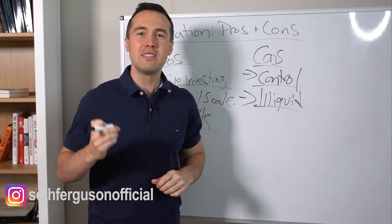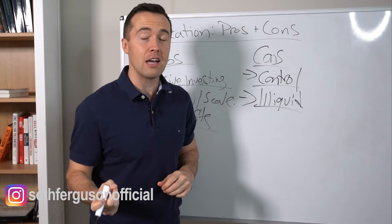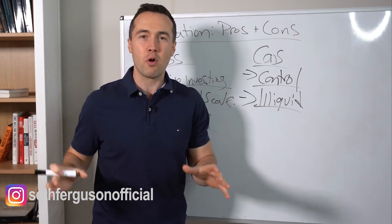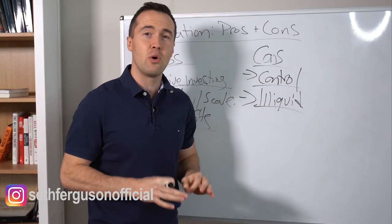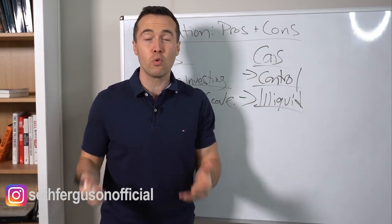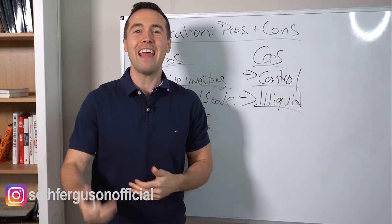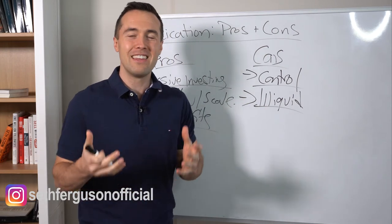If you own stocks, you can sell tomorrow. You might be selling at a loss, but you can sell no matter what tomorrow, depending on the price. Real estate is not that simple. And especially so in syndications, because there are rules put in place with how you can exit. If you can even exit the syndication,